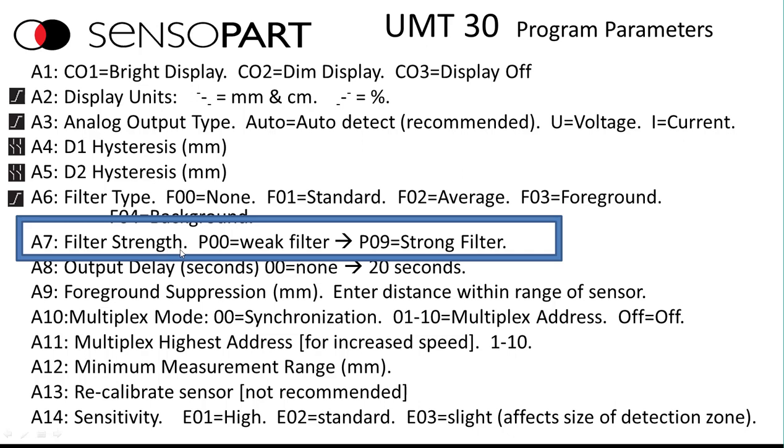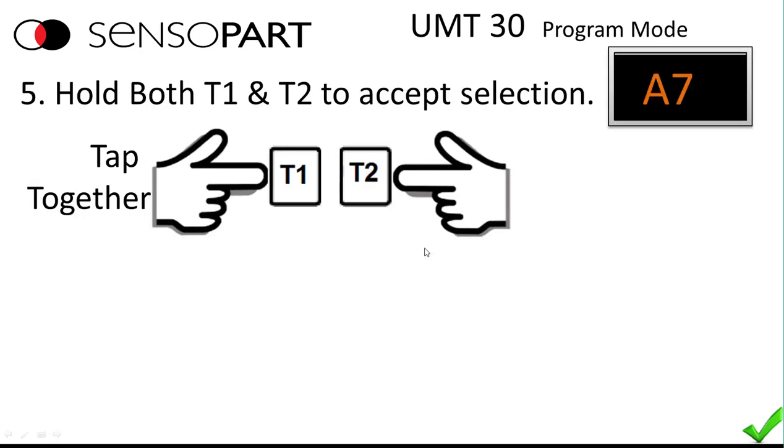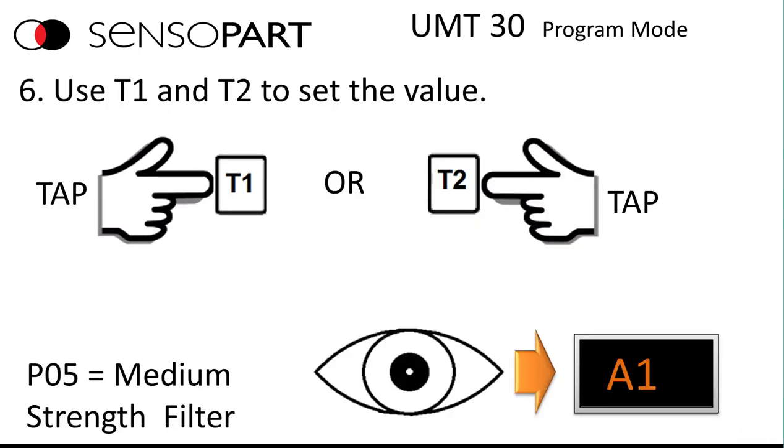A7 here is filter strength. You can select P0 for a weak filter to 9 for the strongest filter. So once you have A7 shown, press and hold both T1 and T2 together. Tap them together to accept the selection of A7.